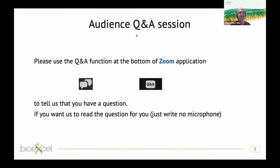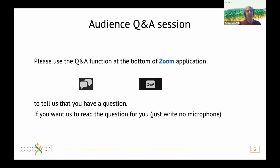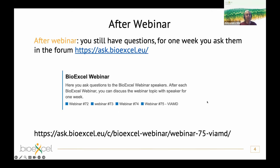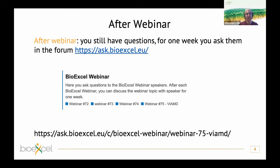During the webinar you can ask questions using the Q&A function at the bottom of the Zoom application. Click and type your question, and note whether you have a microphone. At the end of the webinar we will go through the questions and unmute you if you have a microphone, otherwise we will read the question and Matthieu or Robin will answer. After the webinar, post questions to the BioExcel forum under the webinar category.